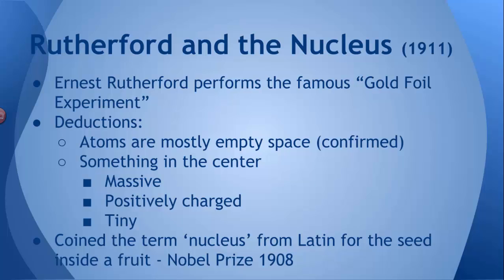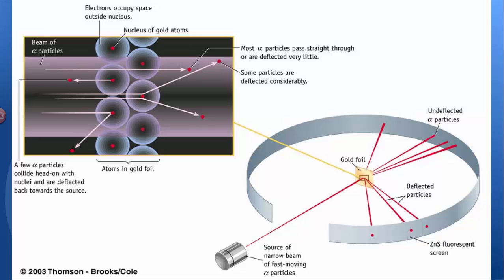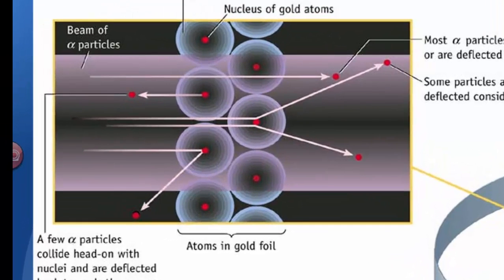And if you think of where the seed is, it's right in the middle and it's fairly small. And then you get the rest of the fruit. Well, this is what he envisioned the nucleus was. And in 1908, he won the Nobel Prize for this discovery. The gold foil experiment was very, very important.